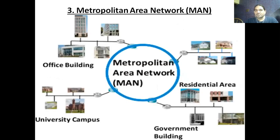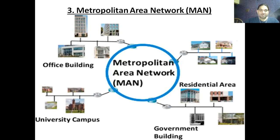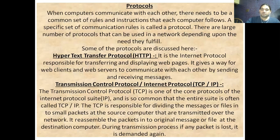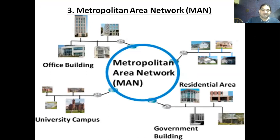The third type is MAN — Metropolitan Area Network. It can cover office buildings, residential areas, government buildings, and universities across one full area. MAN is more effective compared to PAN and LAN.